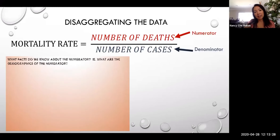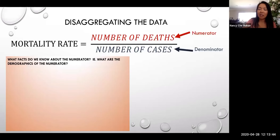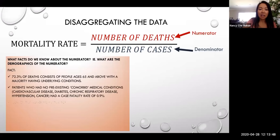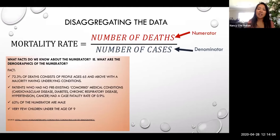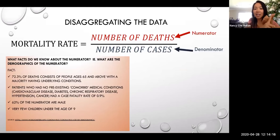In terms of disaggregating the data, I'm looking at the numerator first, because the data consists of a numerator and a denominator. What facts do we know about the numerator? What are the demographics of the numerator — who's dying? Well, these are facts based on Worldometers, and I don't think anyone would argue against them. Most people right now: 72.3% of deaths consist of people ages 65 and above, with the majority of them having underlying conditions — what they call comorbid medical conditions, things like cardiovascular disease, diabetes, chronic respiratory disease, hypertension, and cancer. Those are things that increase your chances of dying if you had the coronavirus.